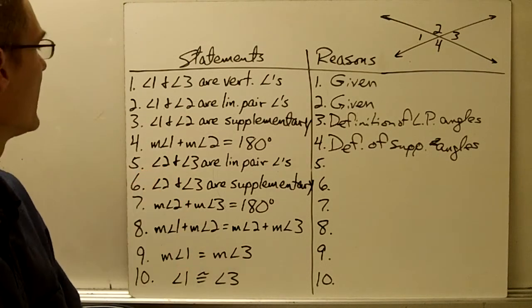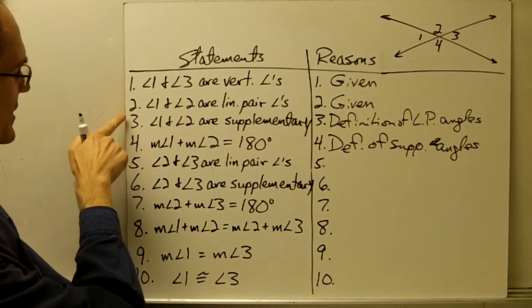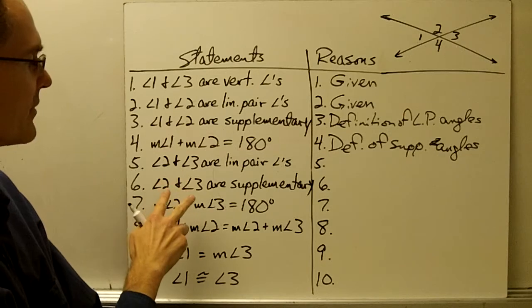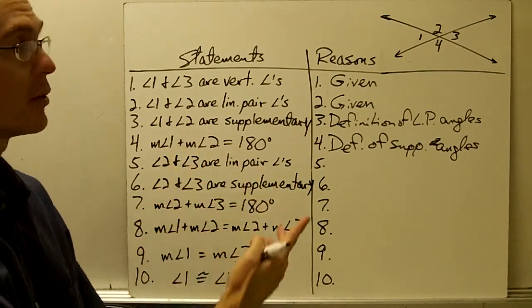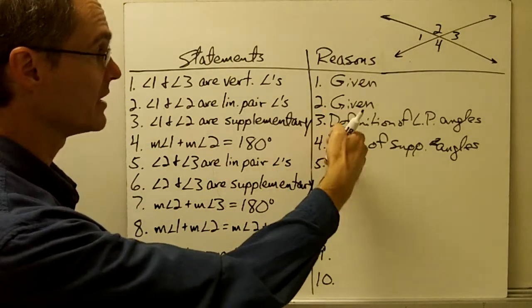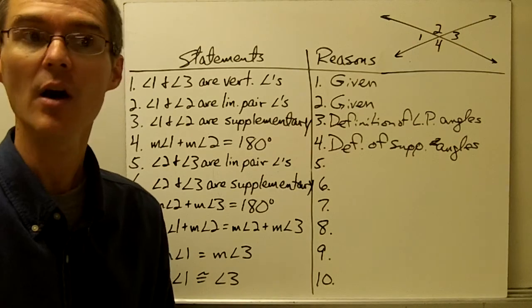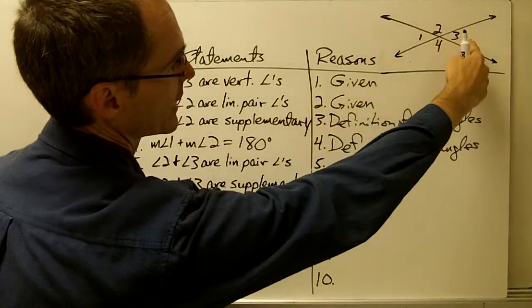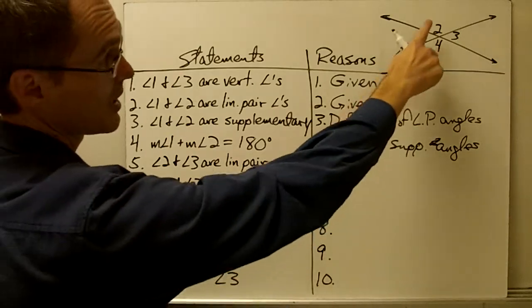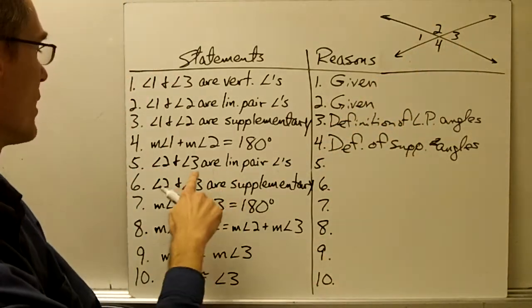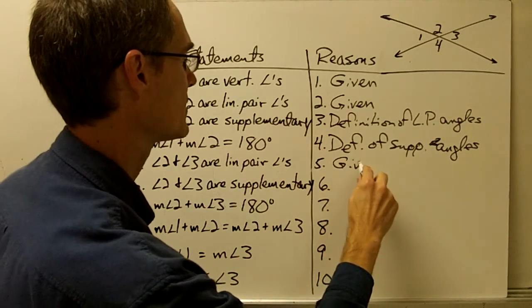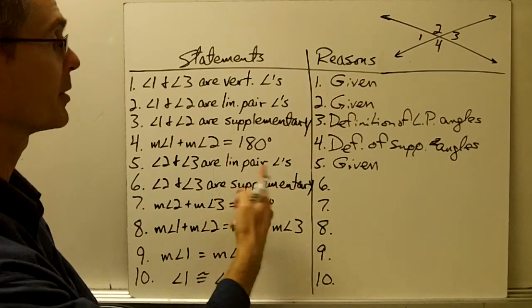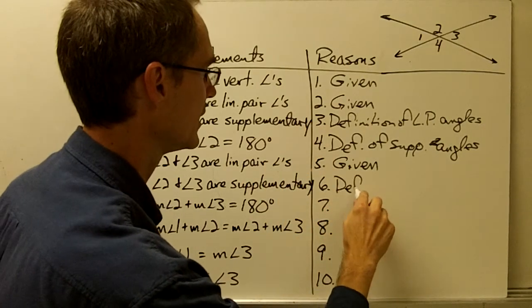Statements 5, 6, and 7 look very similar to statements 2, 3, and 4 — almost identical except using slightly different angles. Statement 5: angle 2 and angle 3 are linear pair angles — that information is given as part of the proof. Statement 6: angles 2 and 3 are supplementary, because that's the definition of linear pair angles.